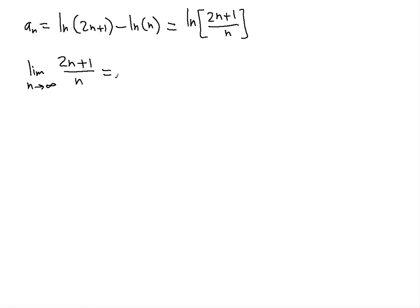So we should actually divide both the numerator and denominator by n. So it's going to be (2n+1) divided by n divided by n divided by n.